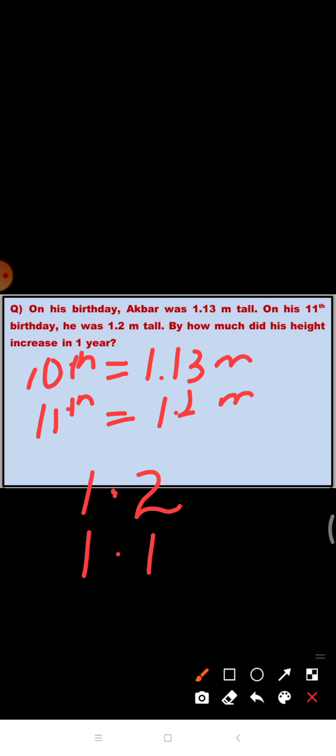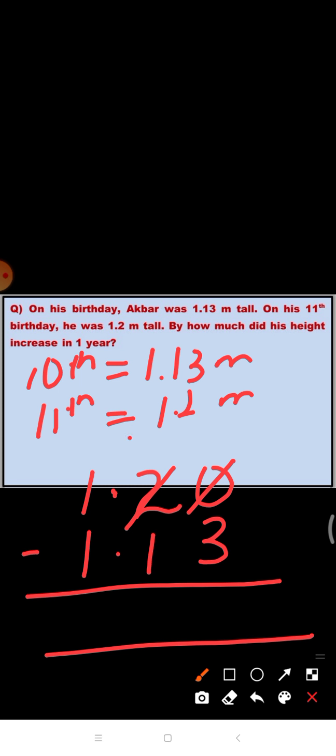We have to do subtraction. We will subtract 1.13 meter from 1.2 meter. So here, 1.2 minus 1.13. So here, we do not have enough 100s. So what we will do? We will regroup. 2 tenths to 1 tenth. And 0 hundredths to 10 hundredths. So 10 minus 3 is equal to 7. 1 minus 1 is equal to 0. Again, 1 minus 1 is equal to 0. And now, I will put the point here.